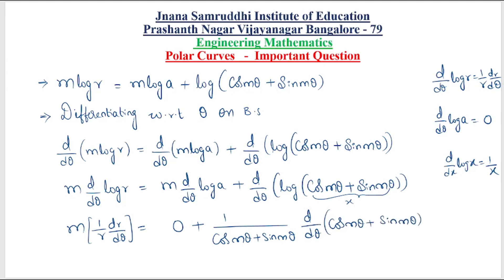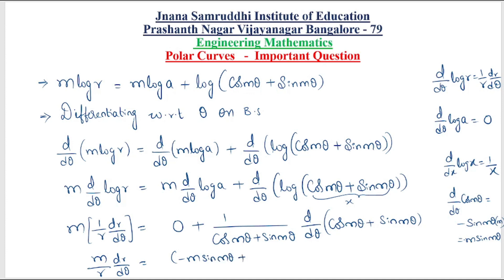So m/r · dr/dθ equals: differentiation of cos mθ is −sin mθ · m (chain rule), giving −m·sin mθ; plus differentiation of sin mθ is cos mθ · m, giving m·cos mθ. All divided by (cos mθ + sin mθ). So m/r · dr/dθ equals (m·cos mθ − m·sin mθ) divided by (cos mθ + sin mθ).